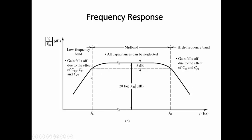From the frequency response graph, at low and high frequency bands the gain reduces. At low frequency, the gain falls due to the coupling capacitors and the source bypass capacitor. At high frequency, gain reduces due to internal capacitances Cgs and Cgd. In the mid-band, the gain is constant and reaches its highest value. The 3 dB frequencies are determined from a line drawn 3 dB below the maximum gain; the intersection points give the upper and lower cutoff frequencies, and their difference is the bandwidth.